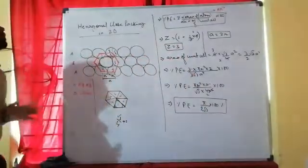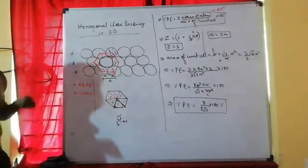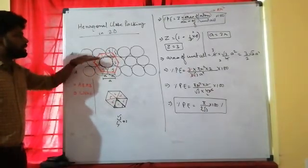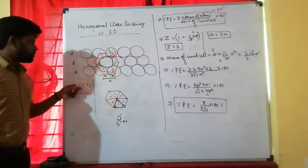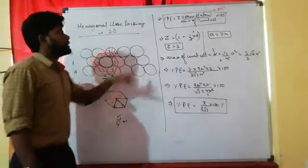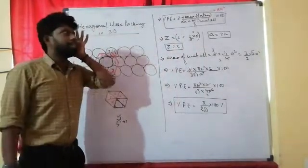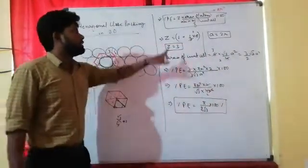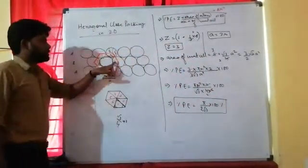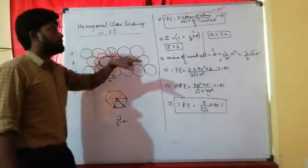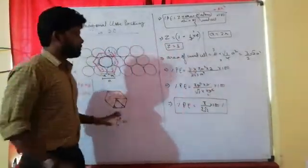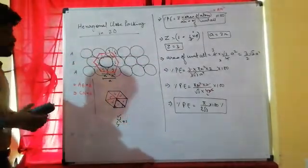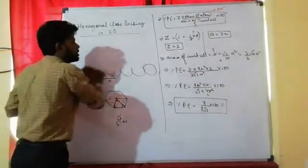This is the result for hexagonal close packing in 2 dimensions: packing efficiency = π/(2√3) × 100%. This is a very important result to keep. The pattern is: layer A, layer B, layer A — A B A B repetition — with coordination number 6.